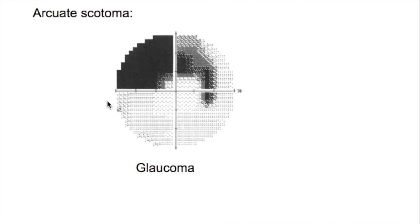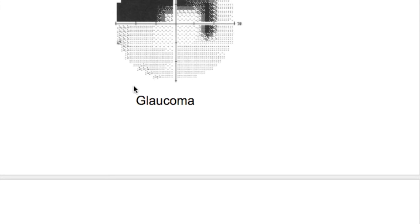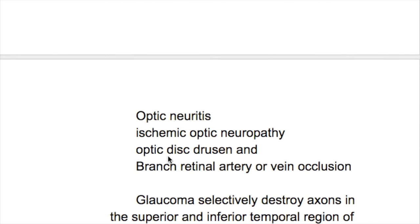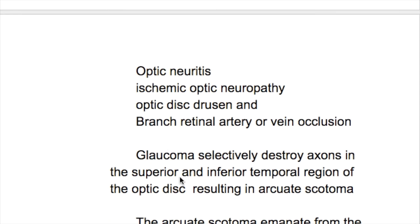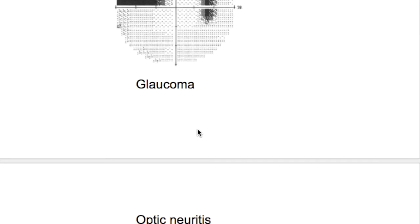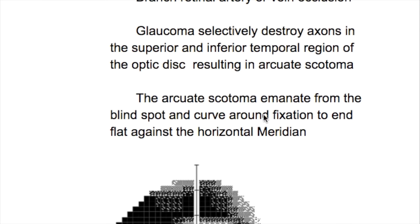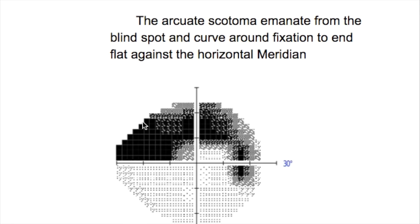Arcuate scotomas are formed in glaucoma, optic neuritis, ischemic optic neuropathy, optic disc drusen, and branch retinal artery or vein occlusion. Glaucoma selectively destroys axons in the superior and inferior temporal region of the optic disc, resulting in arcuate scotoma. The arcuate scotomas emanate from the blind spot and curve around to end flat against the horizontal meridian.